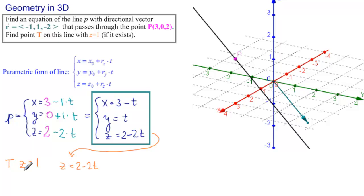I can substitute z equals 1 here, find t, and then find the two other coordinates x and y using that t. So together with these two things, we have 1 equals 2 minus 2t, or minus 1 equals minus 2t.